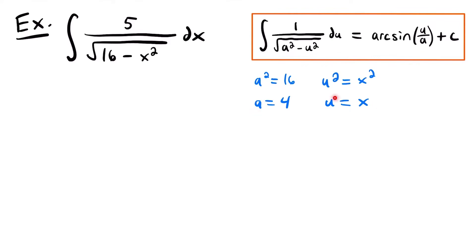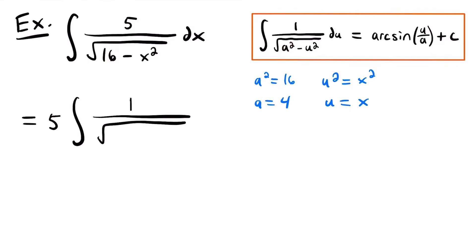Now that we know what a and u are equal to, we can rewrite this integral to more closely represent the function in this integration rule. We'll start by pulling the 5 to the outside of the integral, giving us 5 times the integral of 1 divided by the square root of 4 squared minus x squared. We then take the derivative of u: du/dx equals 1, so du equals dx.